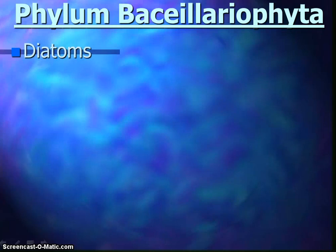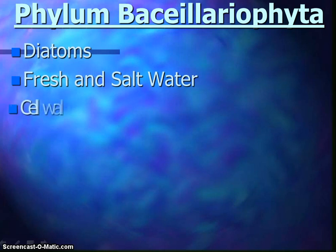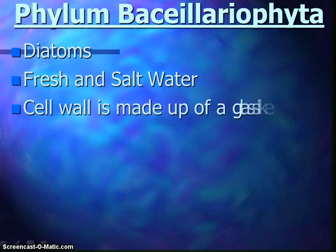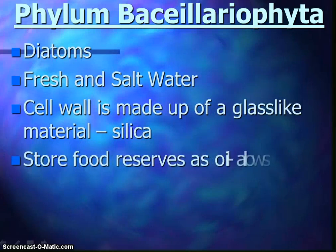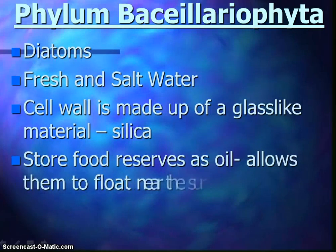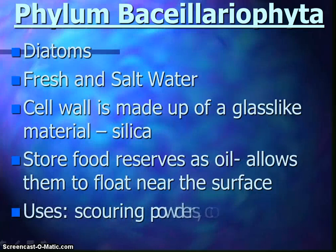The diatoms can be found in fresh and salt water and tend to float near the surface. Their cell wall is made up of a glass-like material called silica — it's like a glass box. When they die, the glass does not decay; instead, it drifts to the ocean bottom where it collects and deposits, and we call that diatomaceous earth. We use it as an abrasive ingredient in scouring powders, cosmetics, and toothpaste, and we use it to filter things like pool filters or juice. They're very important, and diatoms are very beautiful with different shapes and sizes.